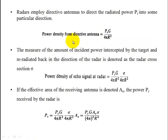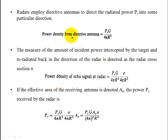Radar mainly uses directive antennas. The power density from a directive antenna is equal to Pt × G divided by 4πr², where G is the gain factor. So on the transmitter side, the power density is PtG / 4πr².